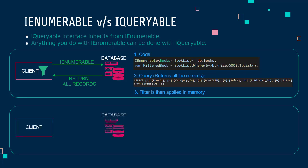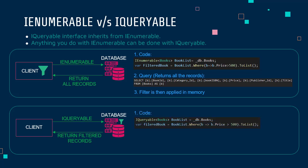So even if you only had one book where the price was greater than 500, it will retrieve all the books from the database, iterate through all of them in memory, and return the matching book. When you work with IQueryable, the client is querying the database with the same condition, but the filter is applied on the query itself — so all the records are not returned. Filtering is done in the SQL itself. With an IQueryable of book list, using the exact same WHERE condition, you can see the query includes WHERE price is greater than 500.